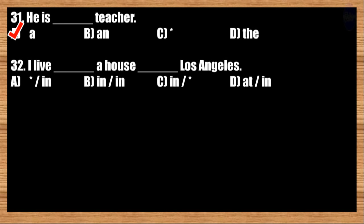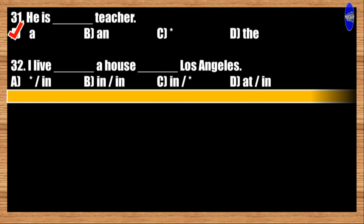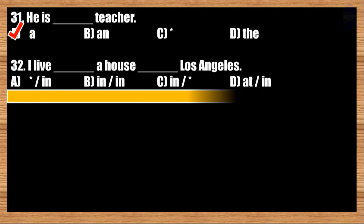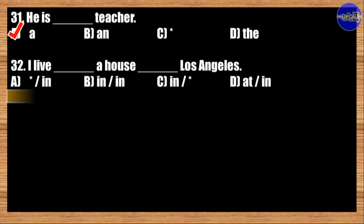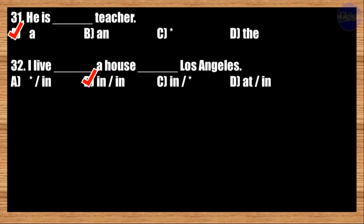Number thirty-two: I live blank in Los Angeles. A: in, in; B: in, in; C: in, in; D: at, in. The correct answer is option B. I live in a house in Los Angeles.